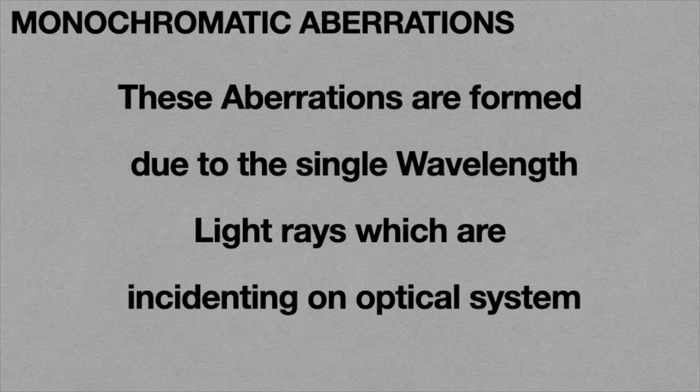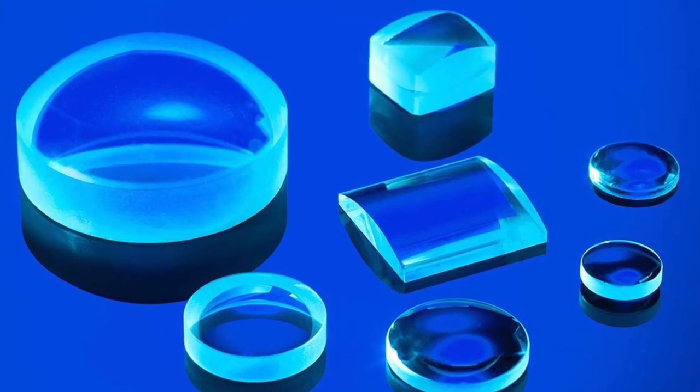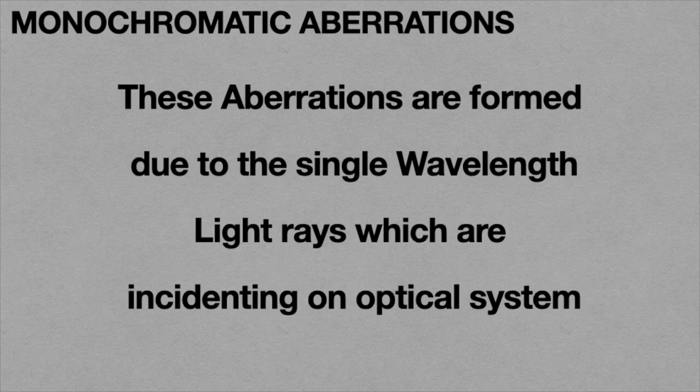Here, optical system means any kind of lens. In monochromatic aberration, the first and foremost aberration is called spherical aberration. The definition is: the inability of the lens to form a point image of an axial point object is called spherical aberration. So, spherical aberration occurs for point objects only.